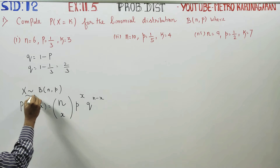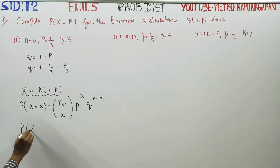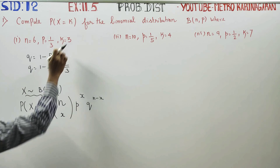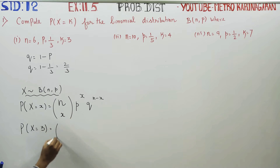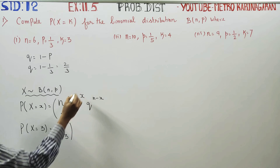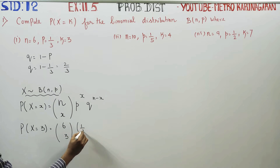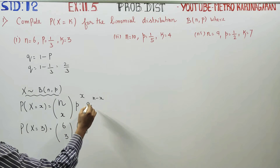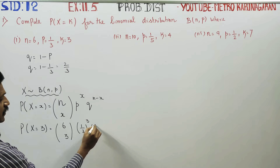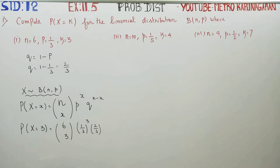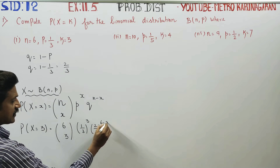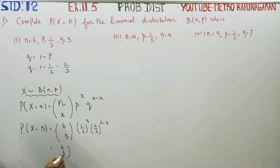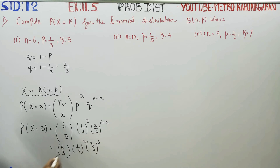Now p is ready and q is ready. x follows binomial distribution, the formula is ready. P(X = k) where k = 3: we have 6C3, p power x is (1/3) whole power 3, and q power (n minus x) is (2/3) whole power (6 minus 3). Therefore your final answer expression is 6C3 * (1/3)^3 * (2/3)^3.